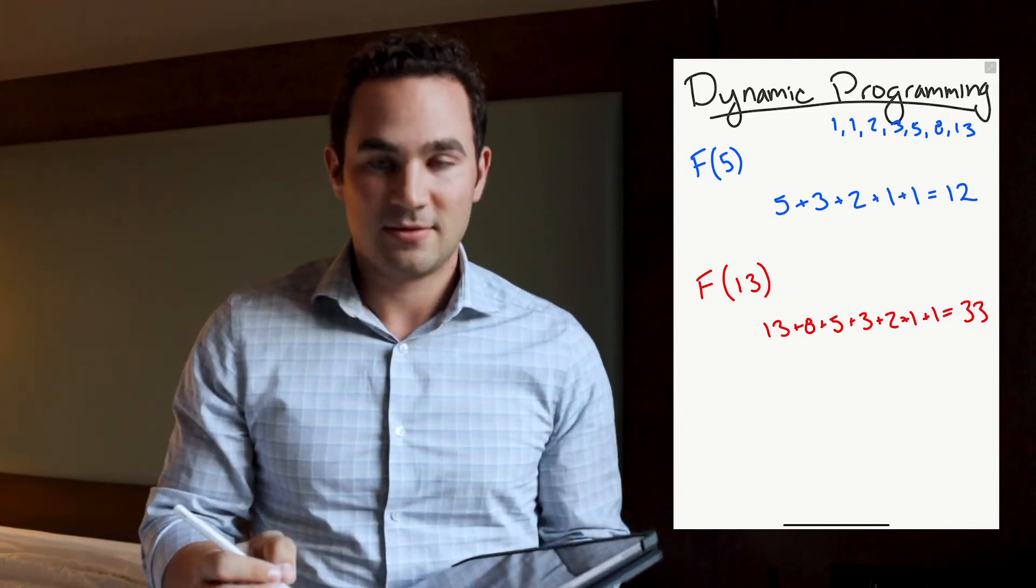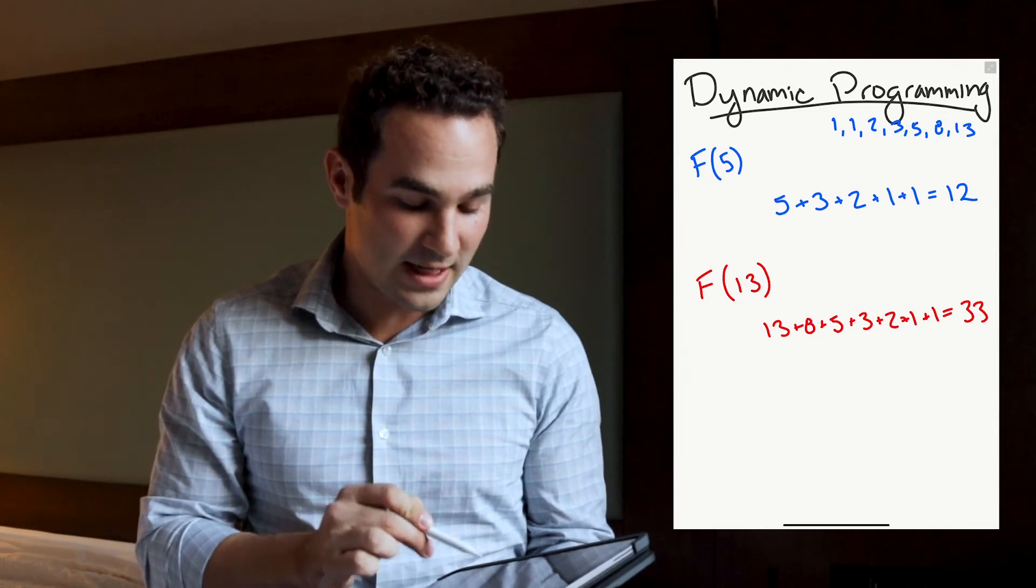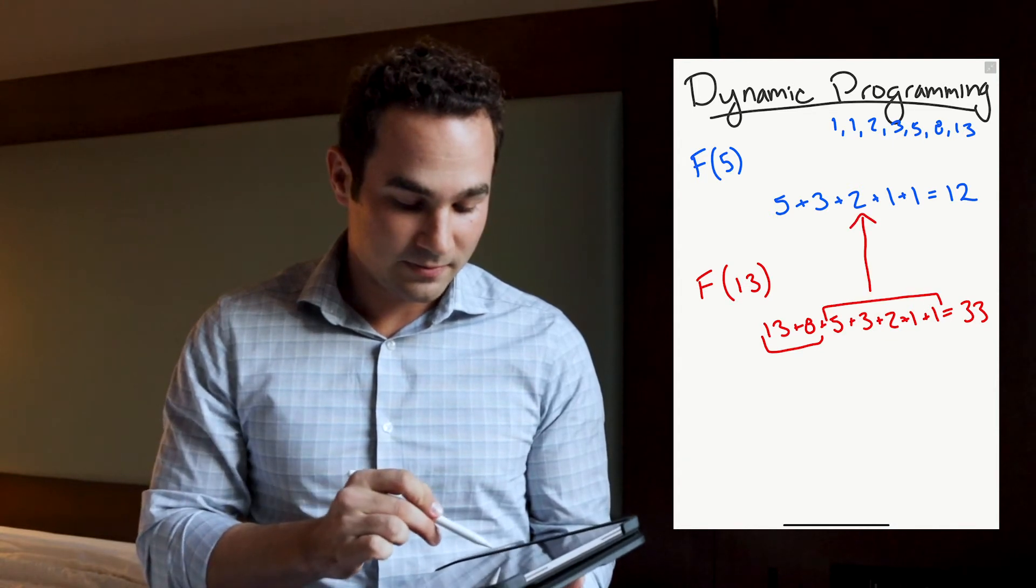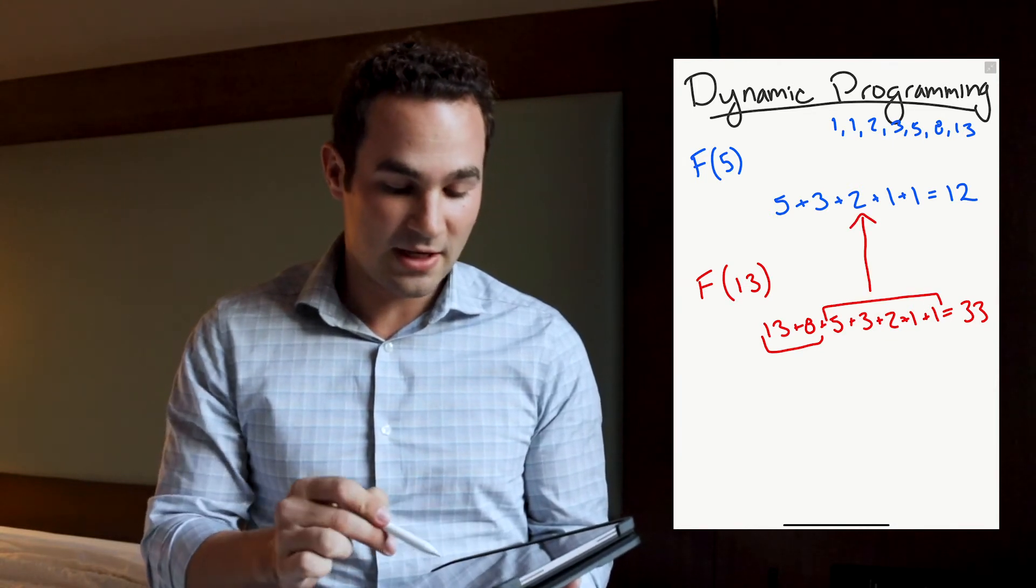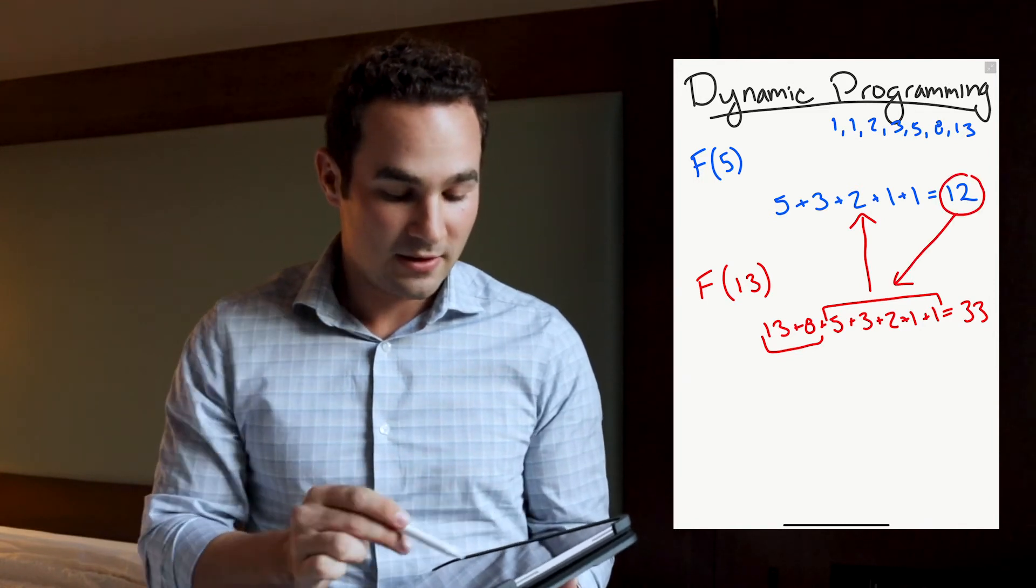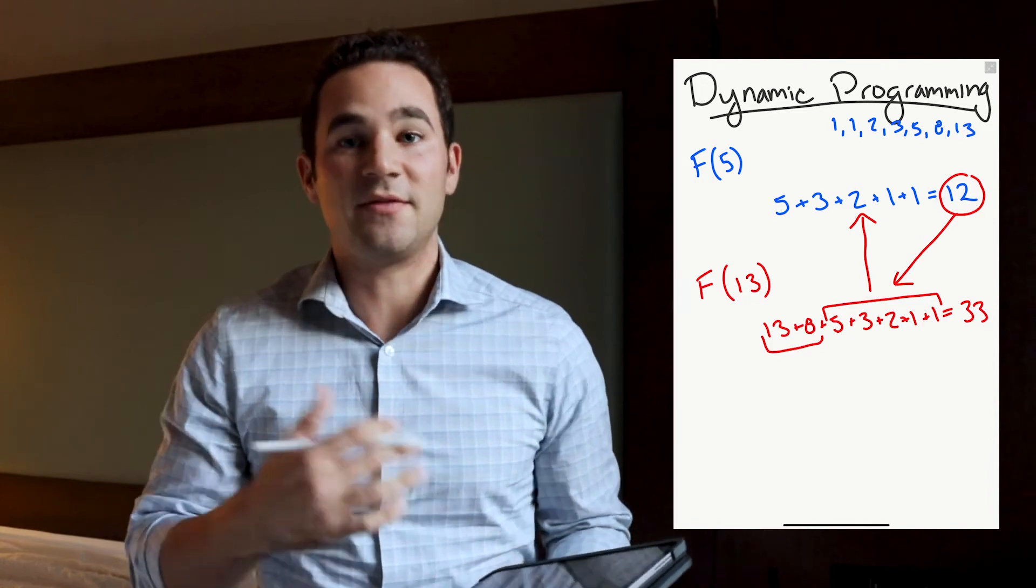But, wouldn't it be so much faster if you could say, okay, all I have to do is the 13 and the eight, and I know that I've already done this additional bit because it's right here. So, you can say, okay, I've already got my 12, which is the value for that F of five, and I can add that to 13 and eight and get the same value of 33, and obviously much faster.